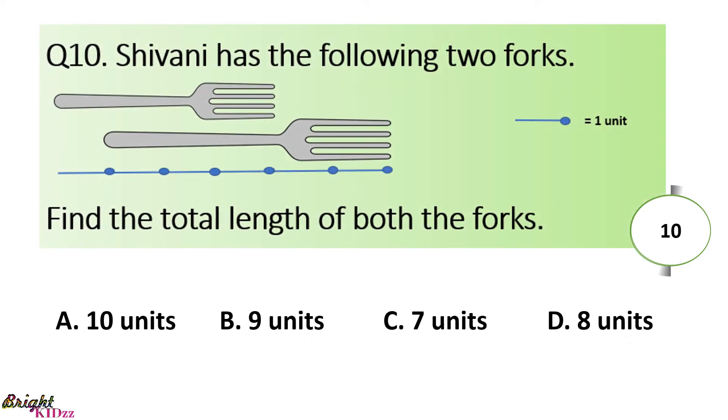Shriwani has the following forks. Find the total length of both the forks. So, here this fork is 1, 2, 3, 4, 5 units. And this fork is 1, 2, 3, 4. 5 plus 4 is equal to 9.